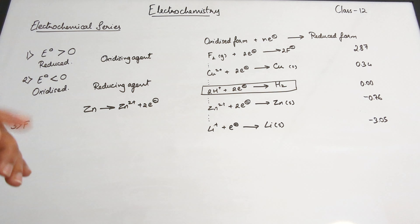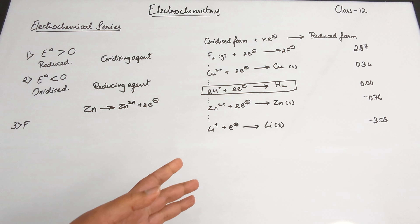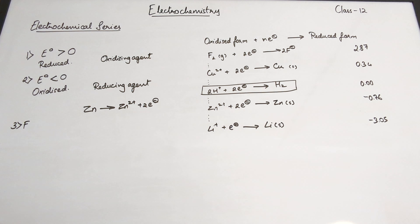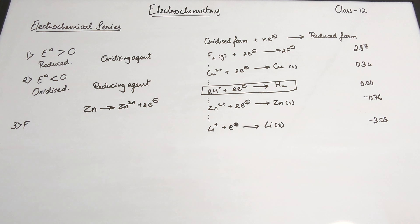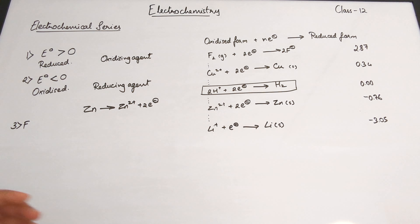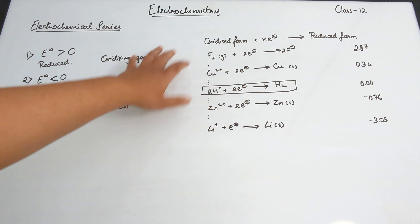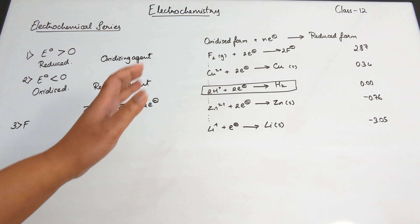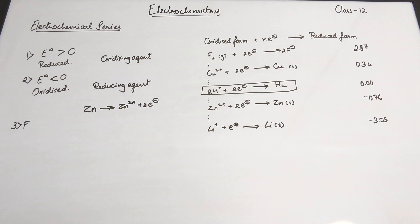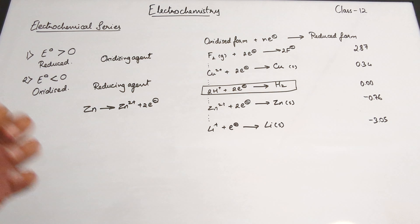When connected to the standard hydrogen electrode, copper will itself get reduced and it will help the oxidation of the standard hydrogen electrode to take place. Because of that, it's a good oxidizing agent. That's case one.